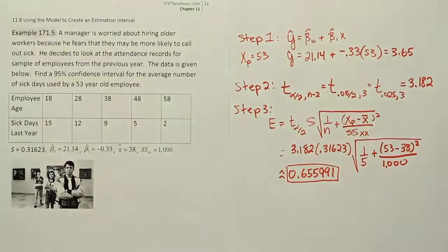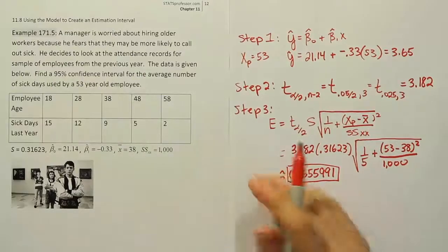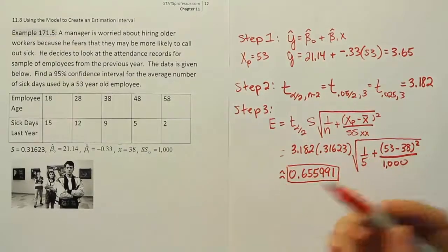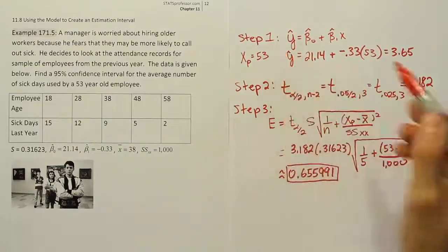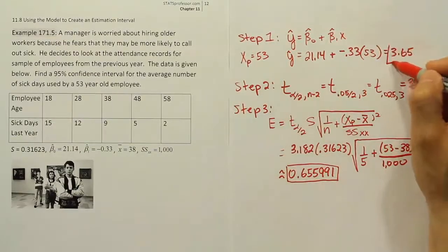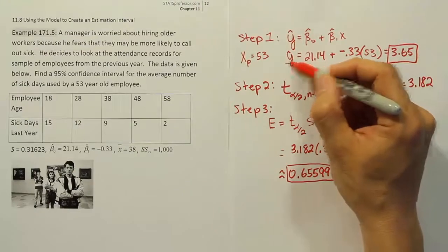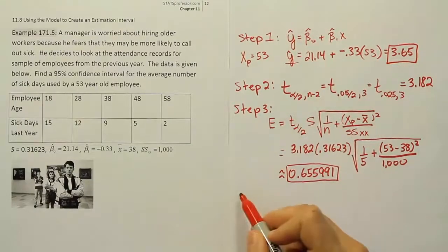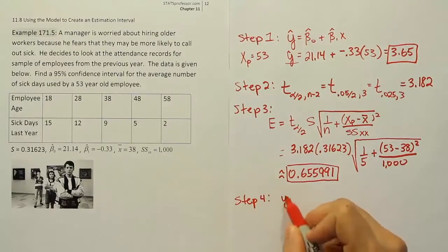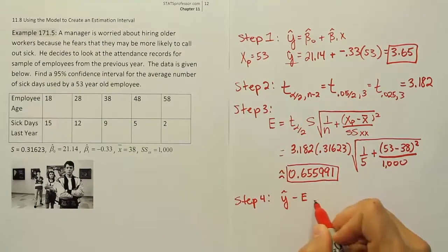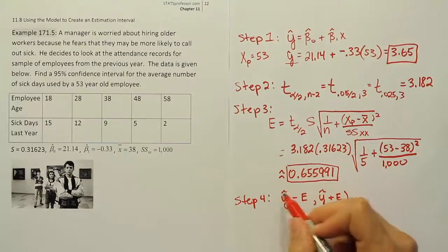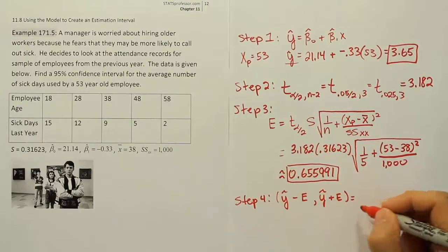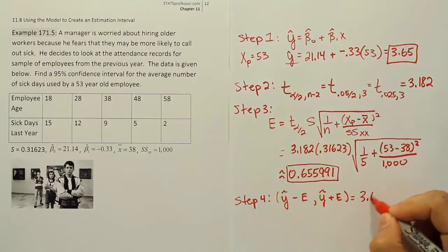Our next step is normally to do the point estimator minus the error and then point estimator plus the error. Our point estimator is what we found in step 1. That quantity of y-hat. We're going to use that in step 4. Our step 4, our final step, is going to be y-hat minus the error comma y-hat plus the error.